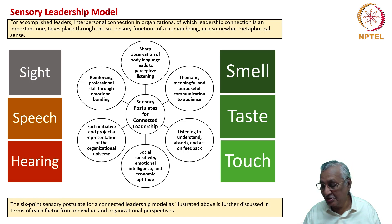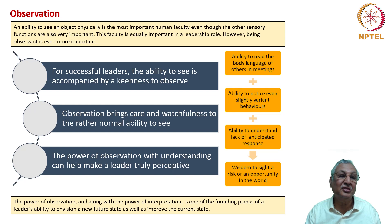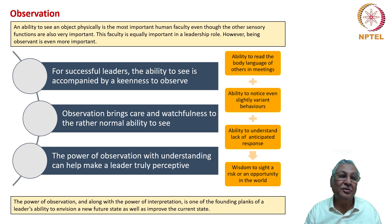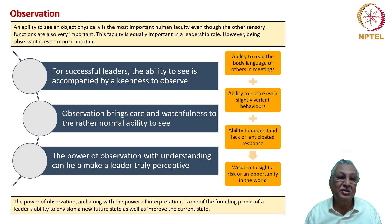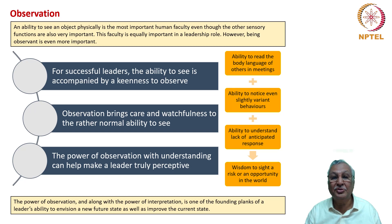The six-point sensory postulate for a connected leadership model is discussed further for individual and organizational perspectives. Let us look at observation. Observation is far beyond seeing — seeing is not observation, although seeing is important. An ability to see an object physically is the most important human faculty, but being observant is even more important for successful leaders. The ability to see is accompanied by a keenness to observe. Observation brings care and watchfulness to the rather normal ability to see — only a few are truly observant. The power of observation with understanding can help make a leader truly perceptive.